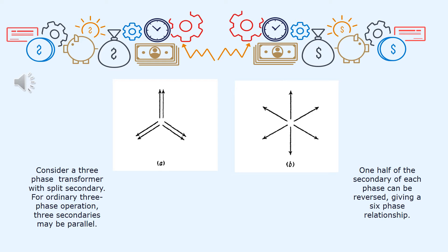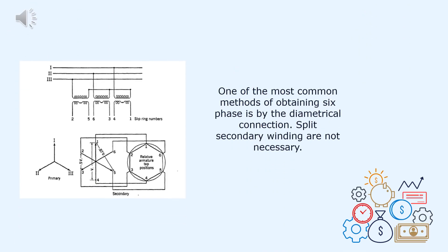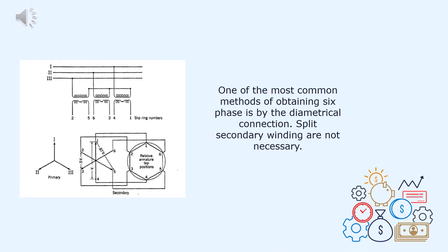One of the most common methods of obtaining six-phase is by the diametrical connection as shown in this figure. Split secondary windings are not necessary, but sa connection ito there is no neutral point provided.